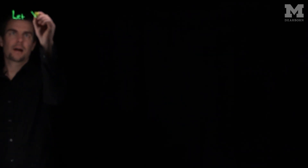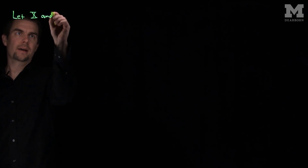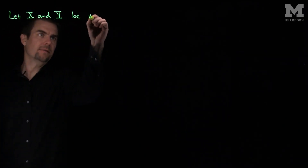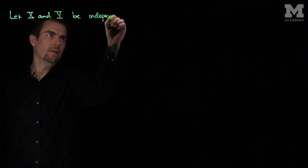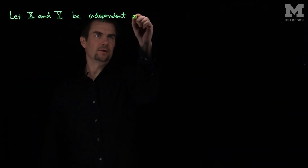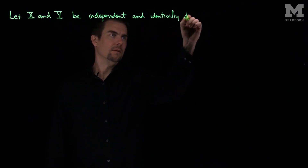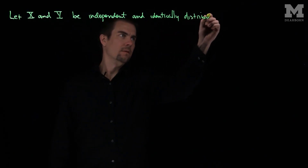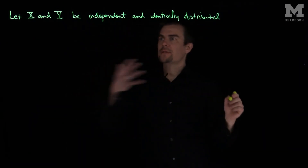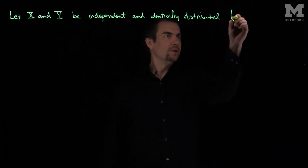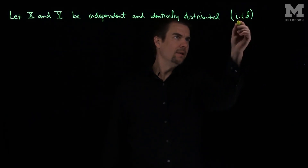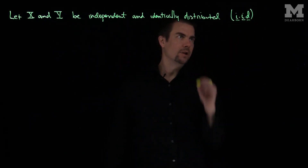Hello students. In this video we'll discuss order statistics. In this context, we'll start with a two variable version of this. Let's let x and y be independent and identically distributed — that just means they have the same distribution. So often times we're going to say these are iid, independent and identically distributed random variables.